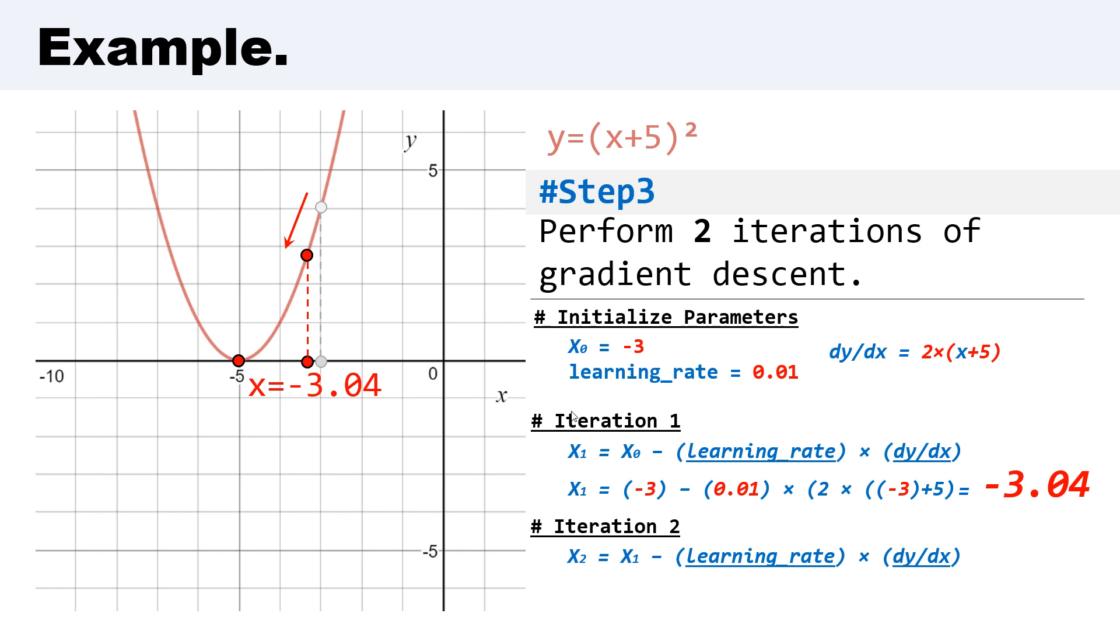Iteration number two. For iteration number two, we have to perform the same action as we did in iteration number one.